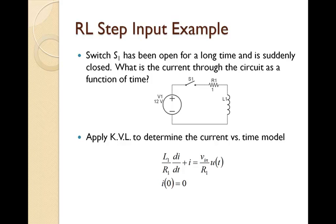Here we're going to look at the RL step input example from class. We have a circuit with a resistor and an inductor in series. At time zero, we're going to flip a switch and connect the voltage supply to the rest of the system. What we want to do is determine how the current through the circuit changes as a function of time.